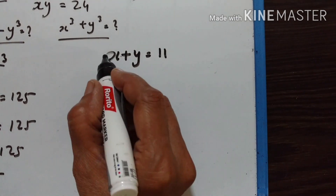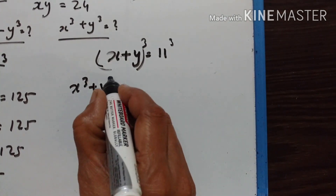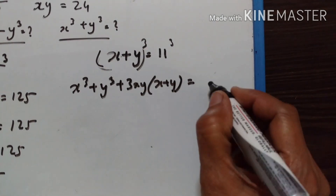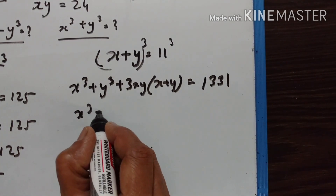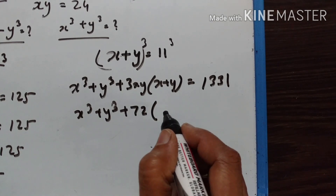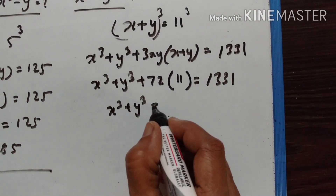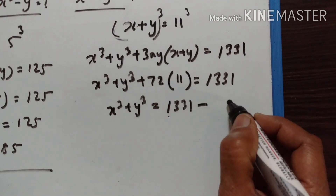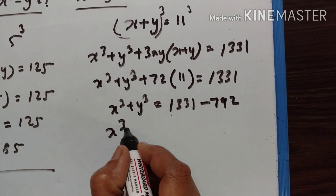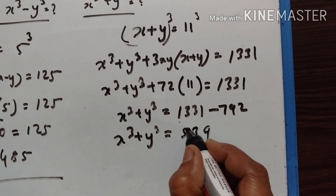Now let's find the value of x cubed plus y cubed. Since x plus y equals 11, cubing both sides: x plus y cubed equals 11 cubed. Expanding, x cubed plus y cubed plus 3xy into x plus y equals 1331. So x cubed plus y cubed plus 3 into 24 into 11, that is 792, equals 1331. Therefore x cubed plus y cubed equals 1331 minus 792, which is 539.